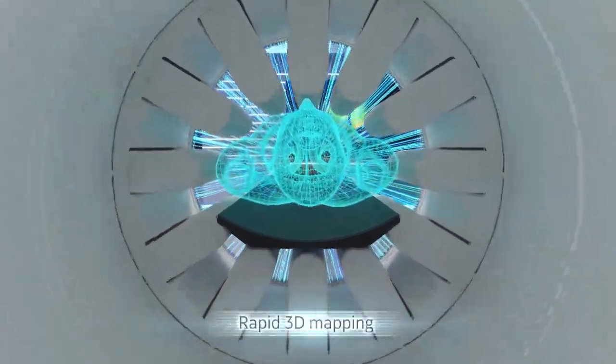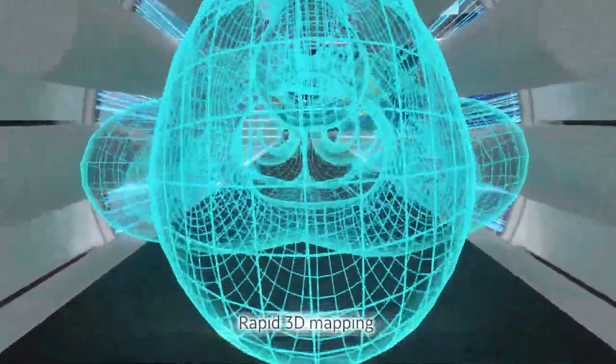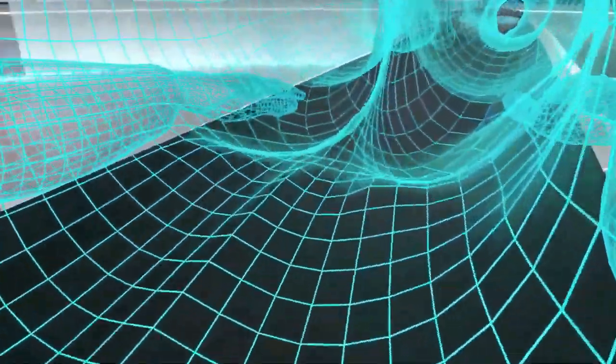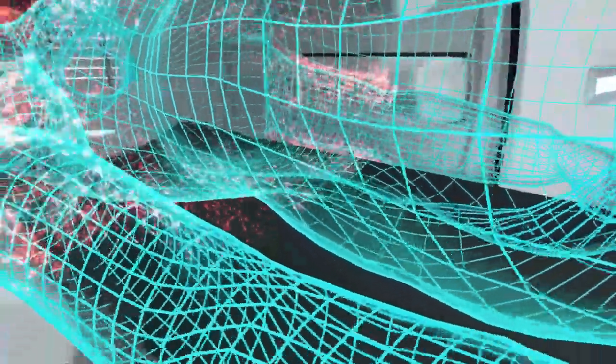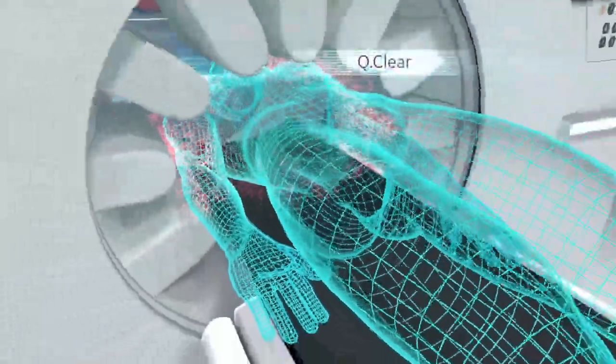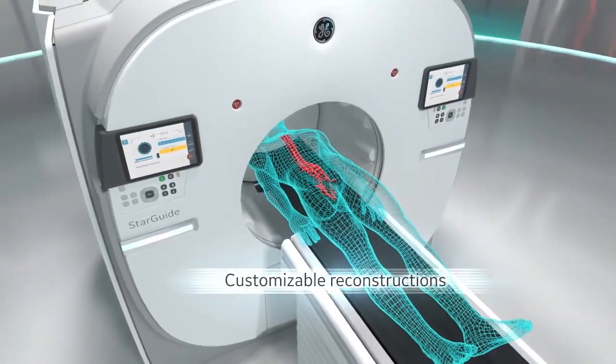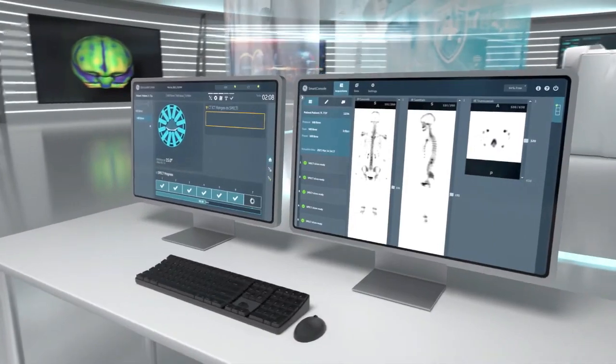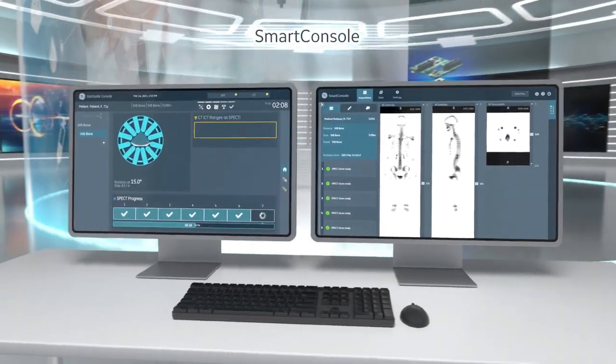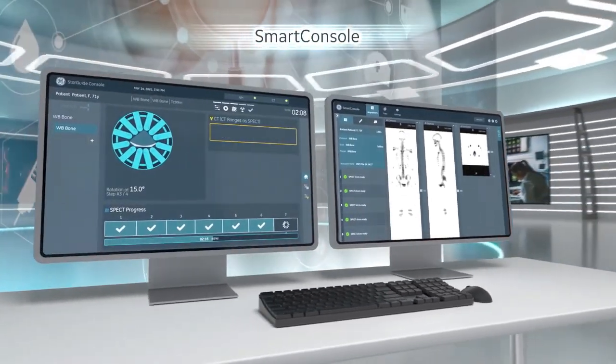The radioisotopes typically used in SPECT to label tracers are iodine-123, technetium-99m, xenon-133, thallium-201, and fluorine-18. These radioactive forms of natural elements will pass through your body and be detected by the scanner. Various drugs and other chemicals can be labeled with these isotopes.